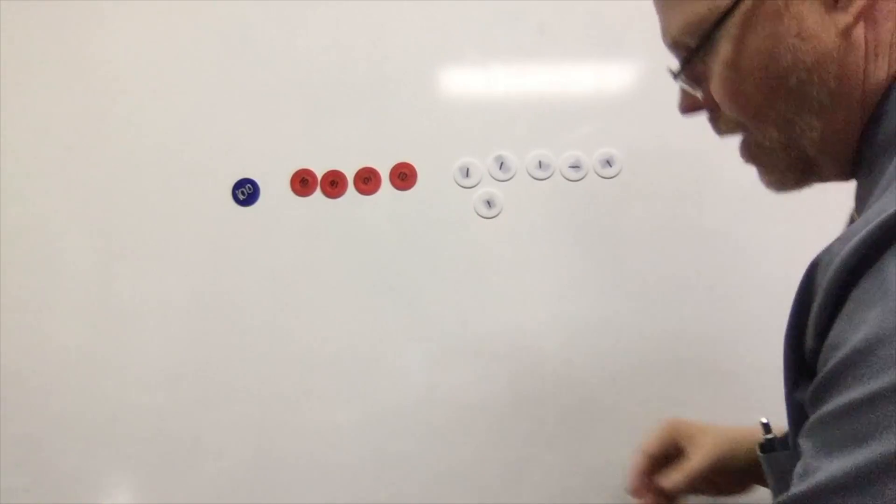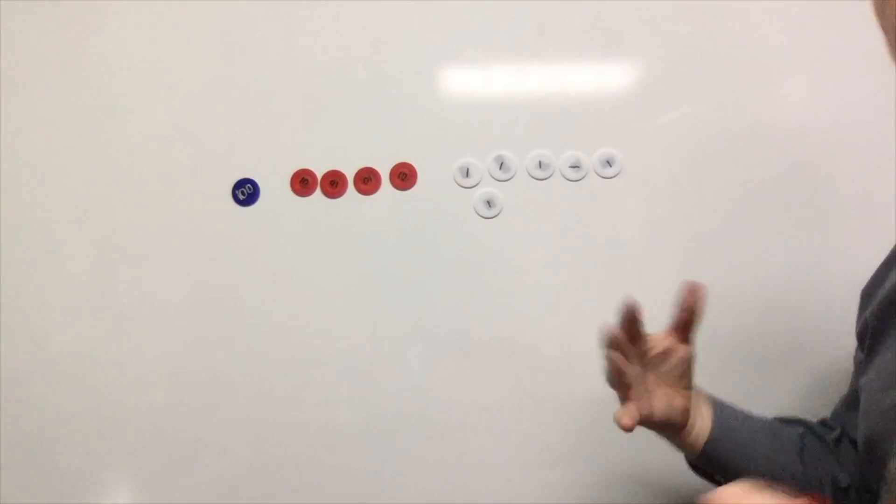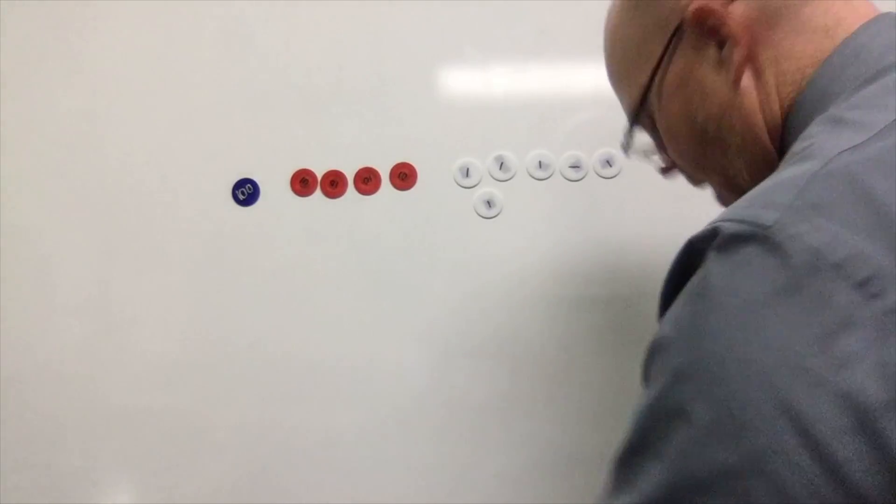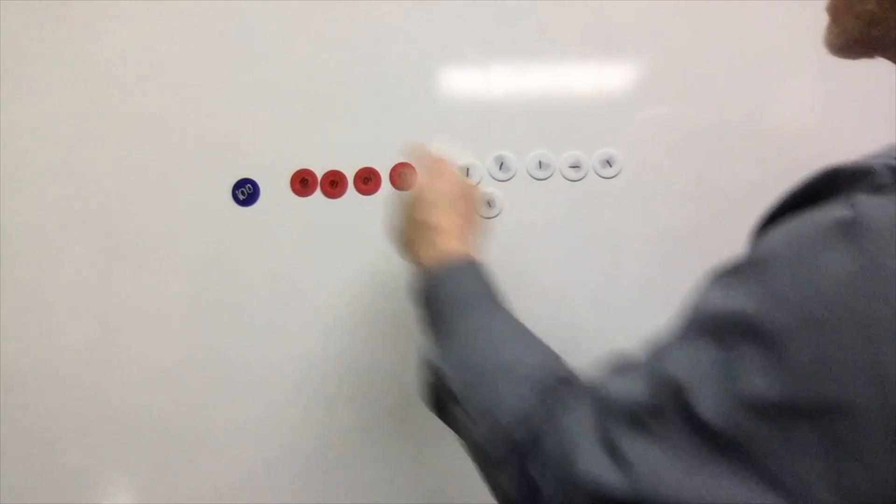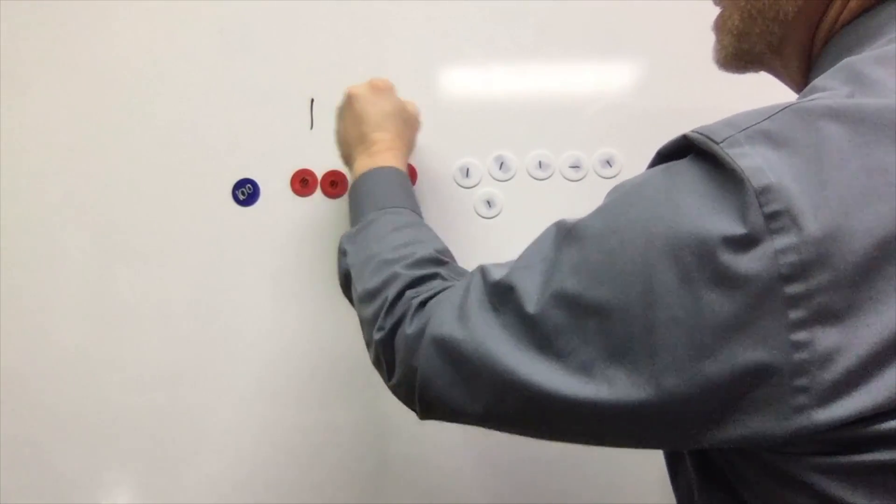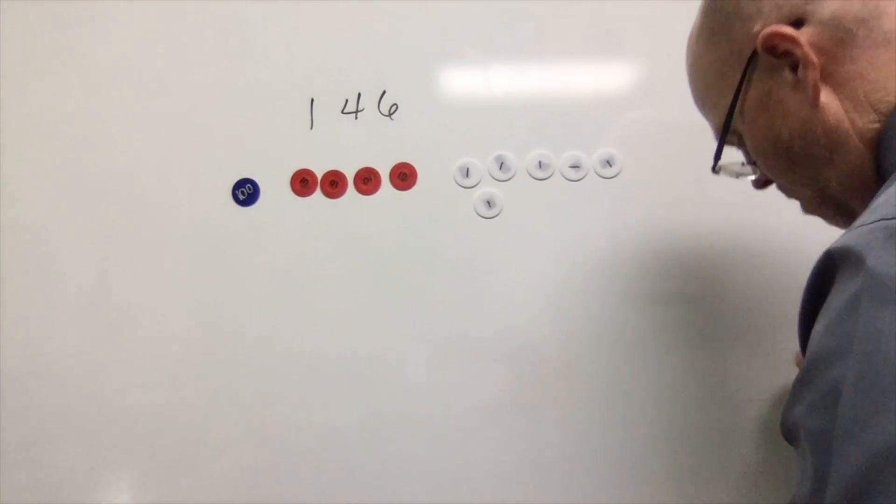Now what's really cool about these place value disks is that we can immediately and visually say, if this is 146, we can ask: what's ten more than 146?